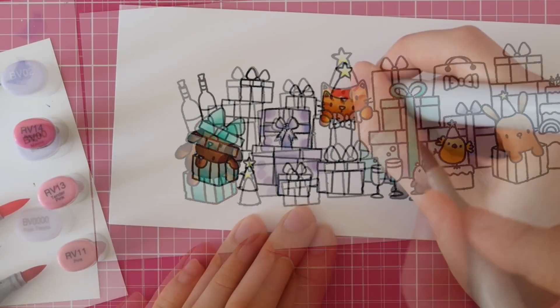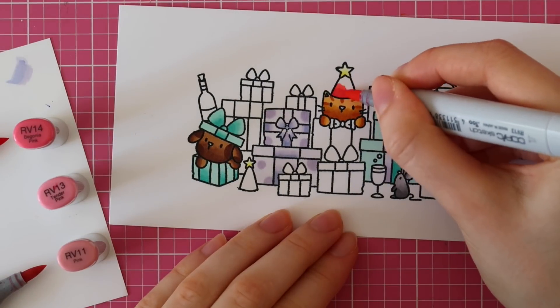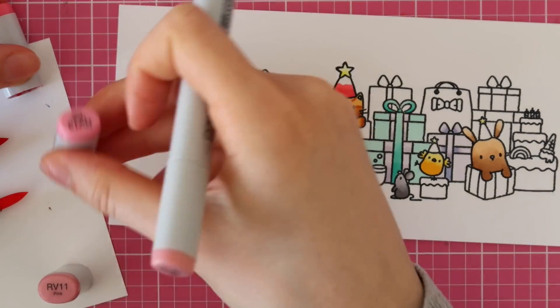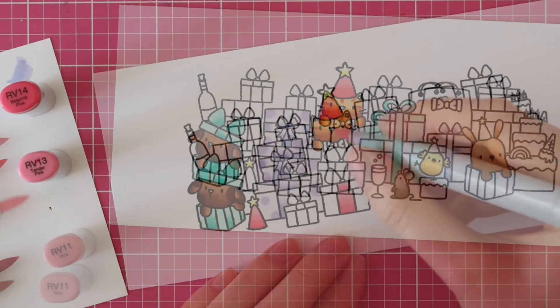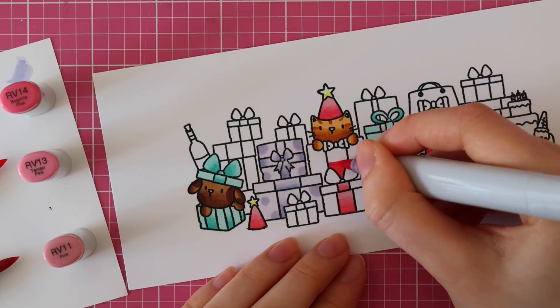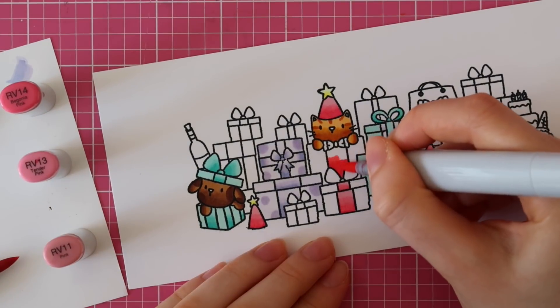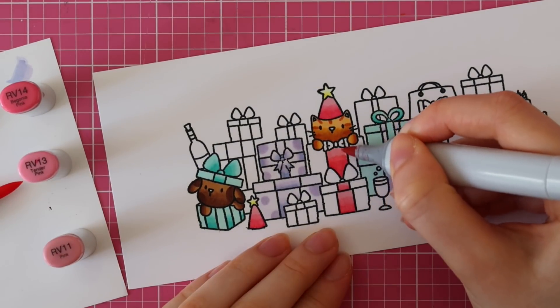And I took some fun foam and some acetate and the usual stuff that I use to create a sequin shaker card. But when you're using the coordinating die of a stamp set, it's actually a little bit harder since everything has to line up.